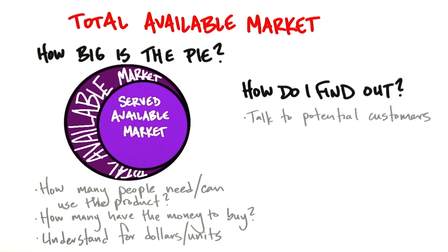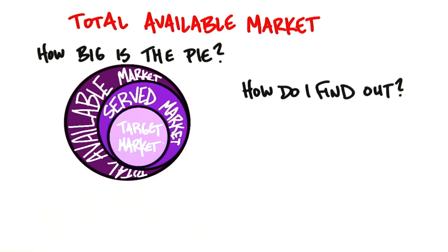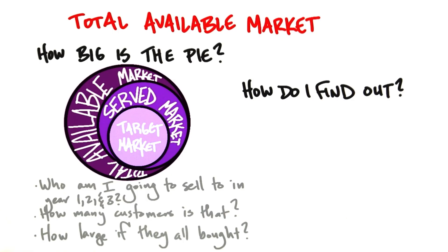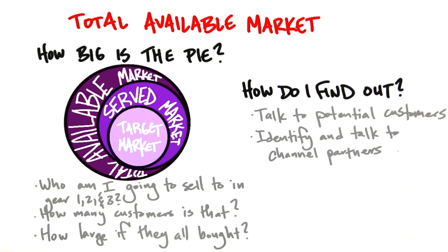Then narrow further: how many would buy at my price? Now get specific — who exactly are you going to sell to in years one, two, and three? How many customers is that? How large is the market if they all bought? If you had 100% market share, your revenue can't exceed that number. This is really about getting out of the building and talking to customers, channel partners, and competitors. At the end of this exercise, you have a first-pass hypothesis about whether this business model canvas is worth executing for the next couple of years.